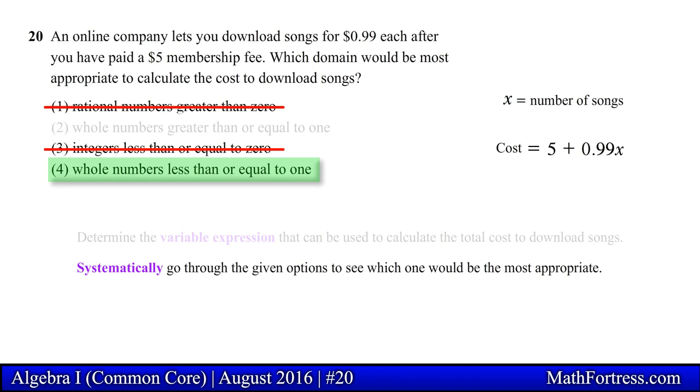Option 4 reads whole numbers less than or equal to 1. This is very similar to the set of numbers from option 3. As a result this option will also make no sense for the domain of the variable x. Doing so would make the company pay us money for buying songs.